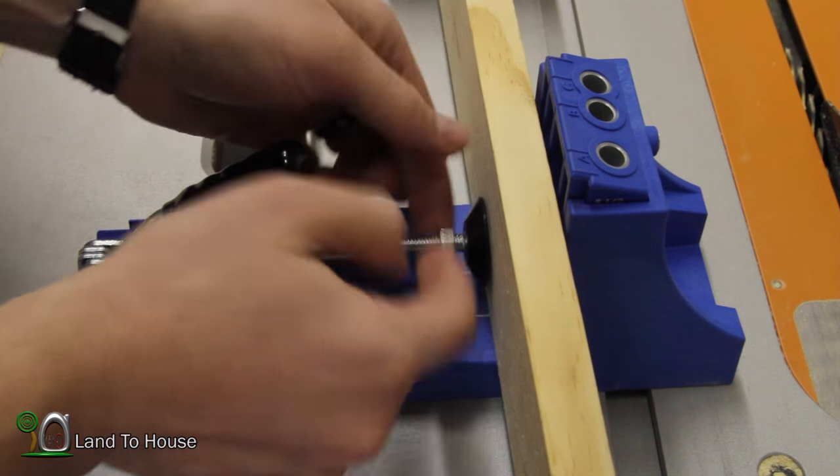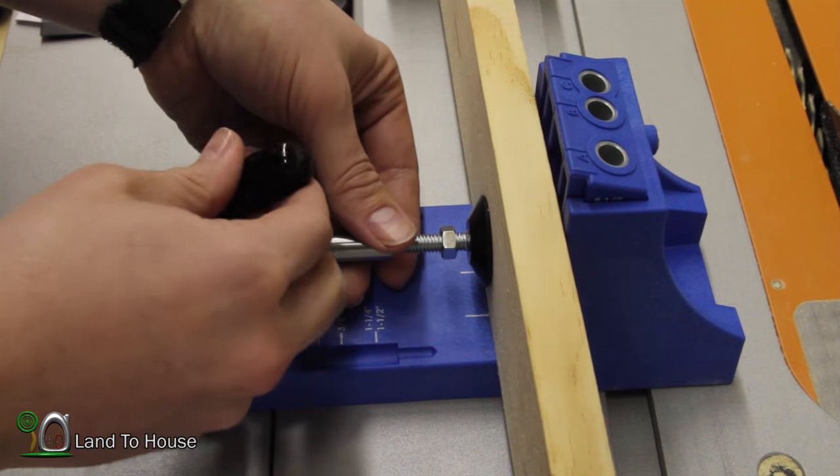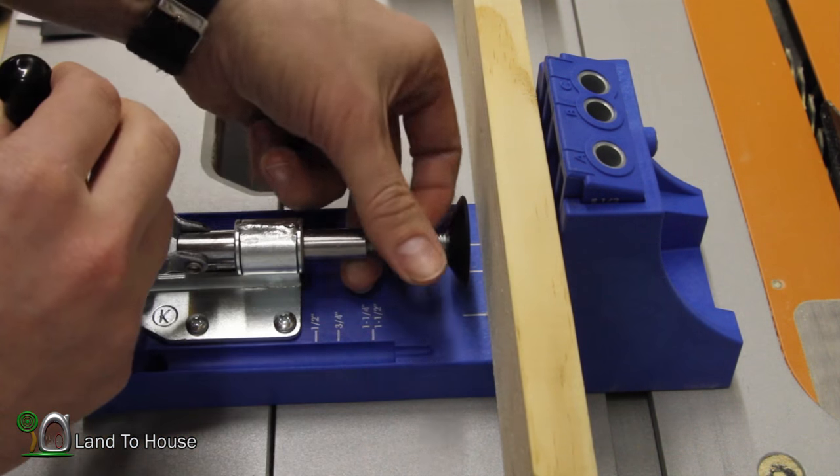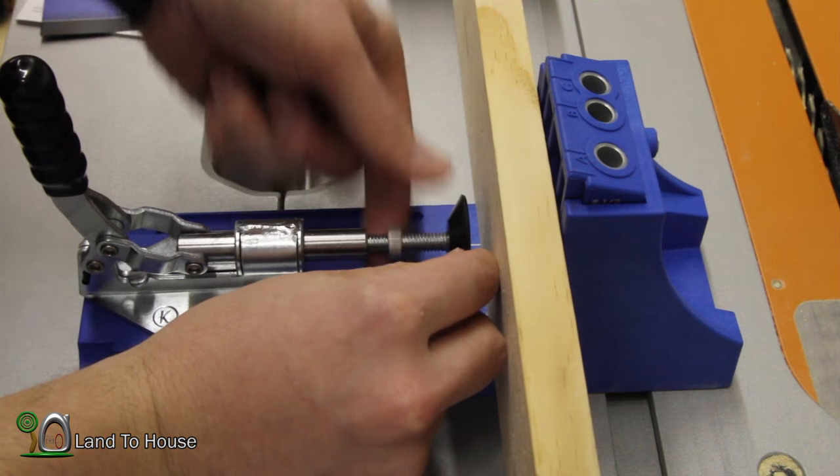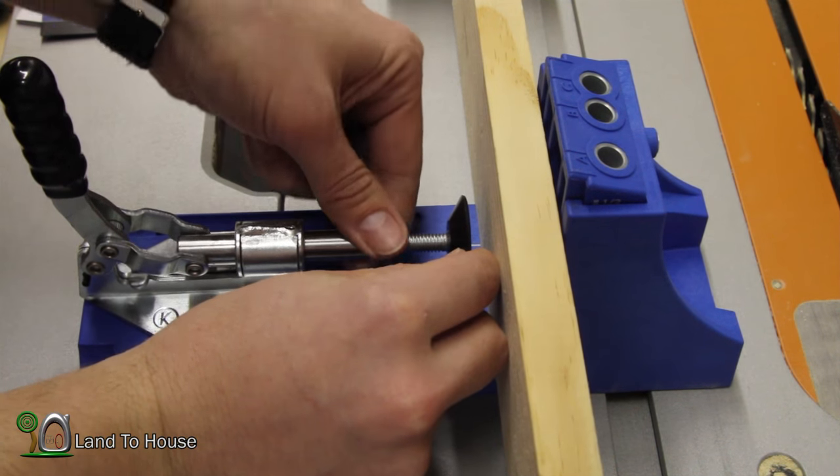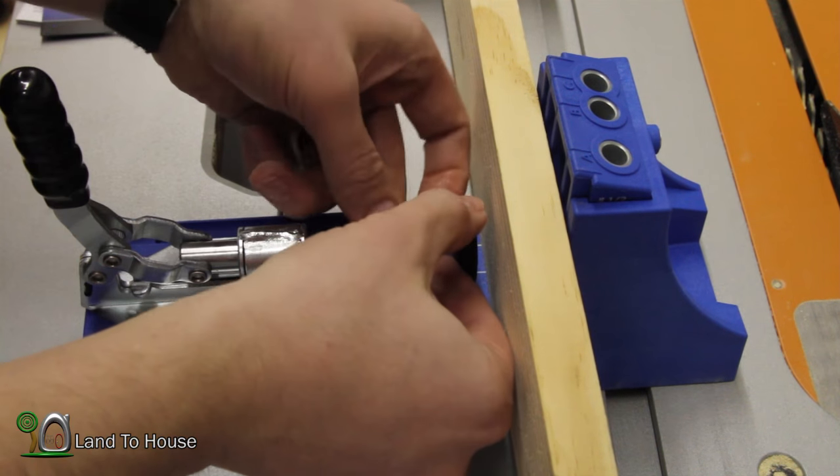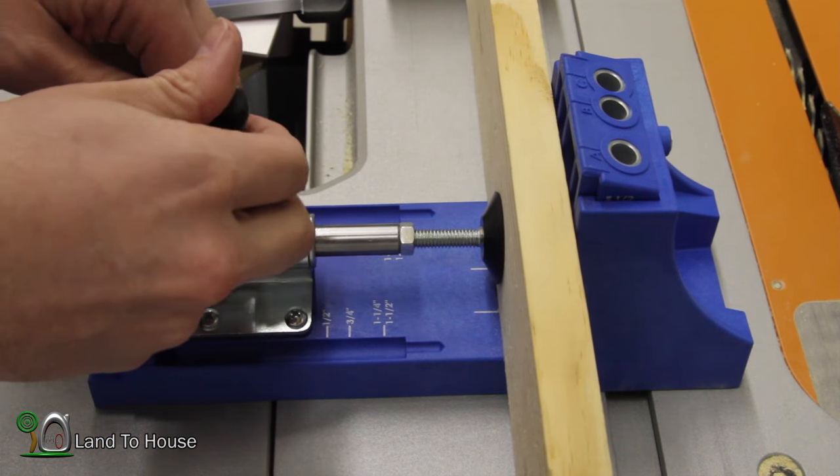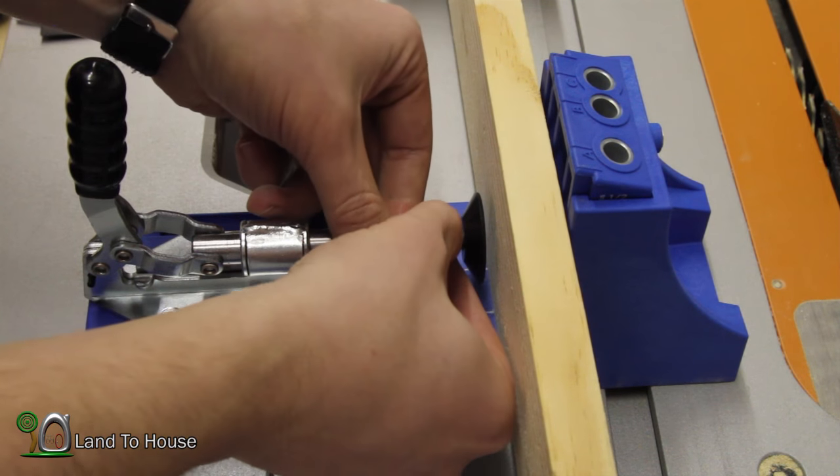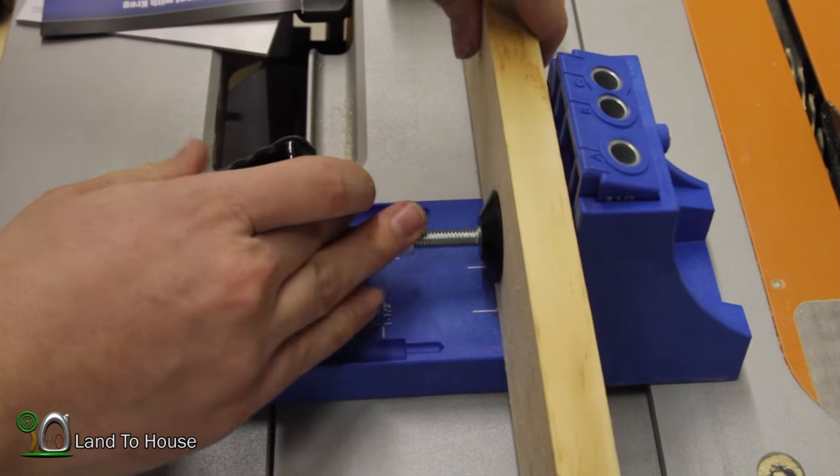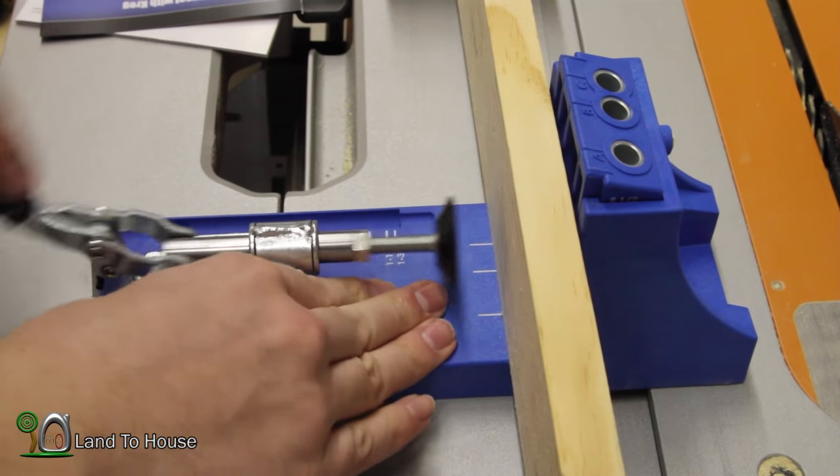I'll just give an example here. I think most of what I'm going to be using is three quarters. So this will be good here. Keeps that in place.